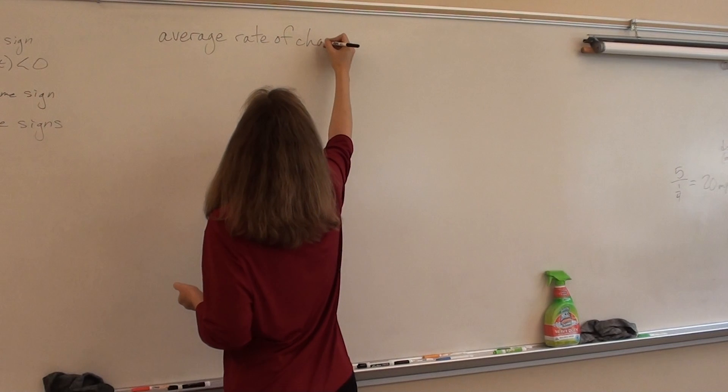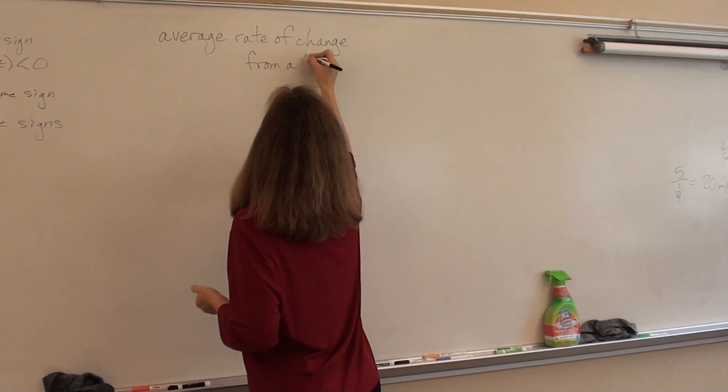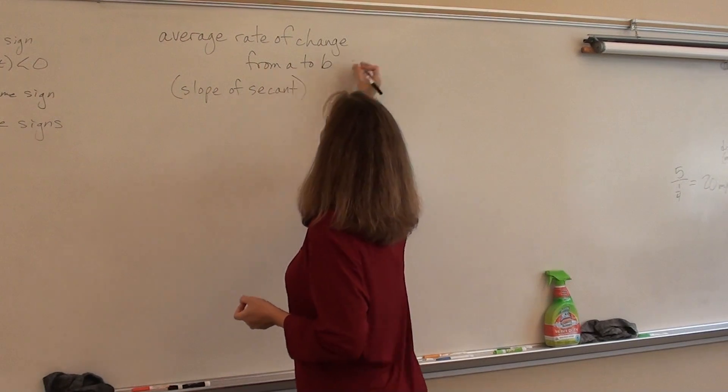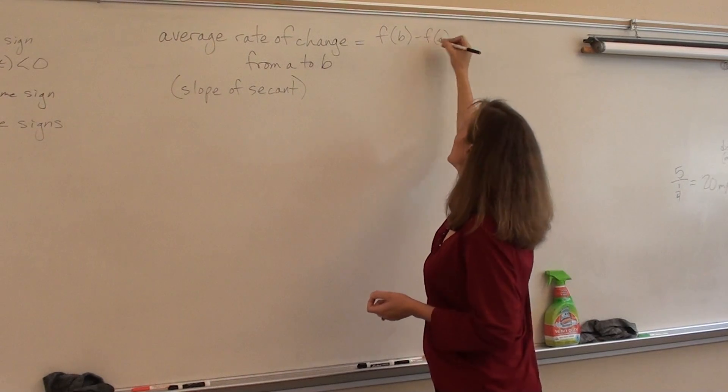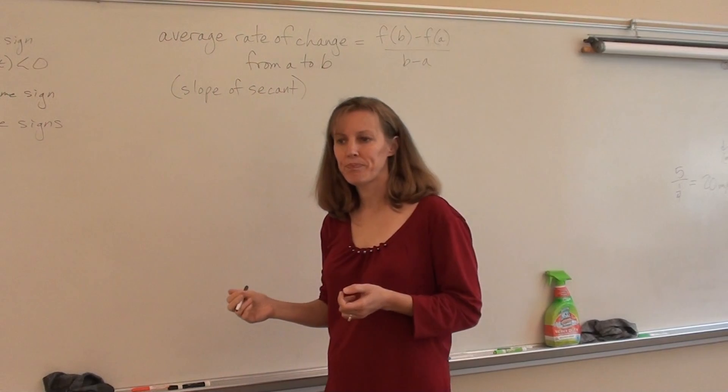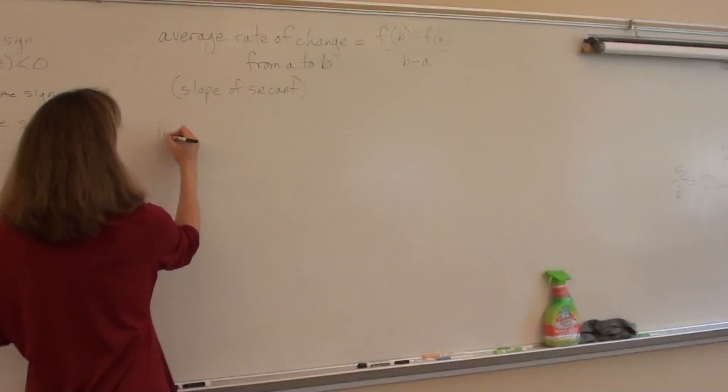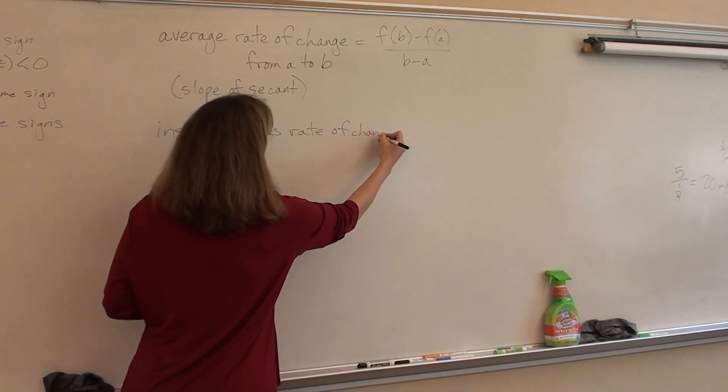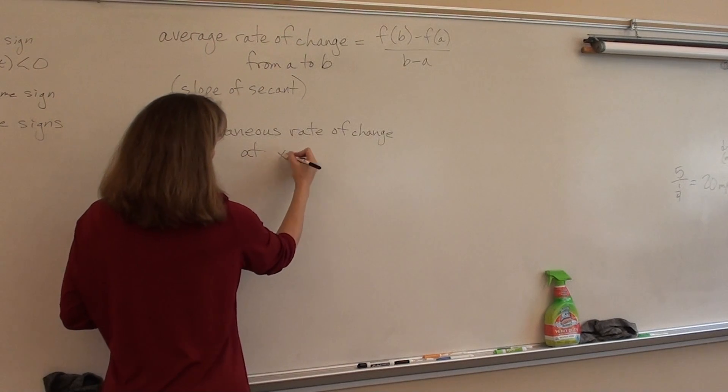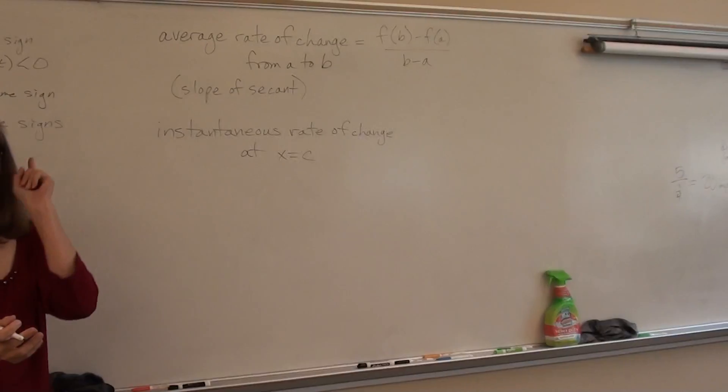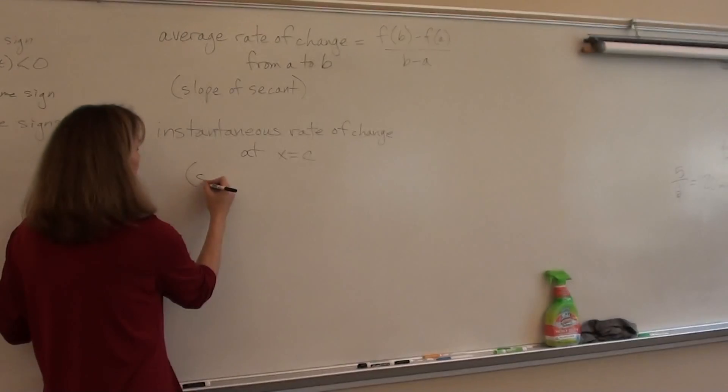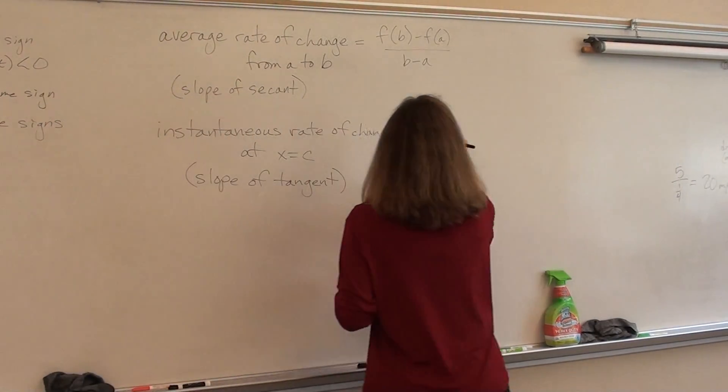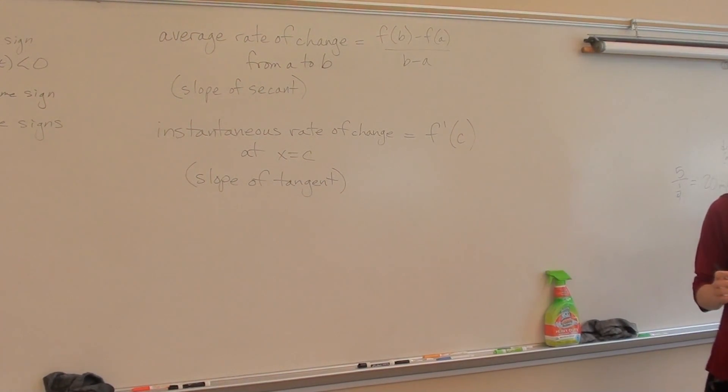An average rate of change from A to B. This is the slope of the secant line. It's just your old-fashioned slope between two points, change in the Y values divided by change in the X values. Nothing new there. An instantaneous rate of change is something that just happens at one time. What's that rate of change? This is the slope of the tangent line, or in other words, the derivative f prime of C.